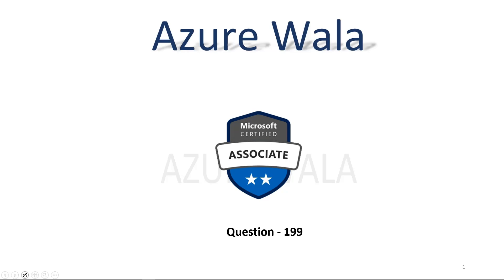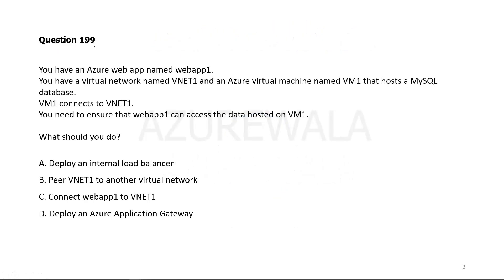Today we are going to look into question number 199. You have an Azure Web App named Web1, a virtual network named VNet1, and an Azure Virtual Machine named VM1 that hosts a MySQL database. VM1 connects to VNet1. You need to ensure that Web1 can access the data hosted on VM1.